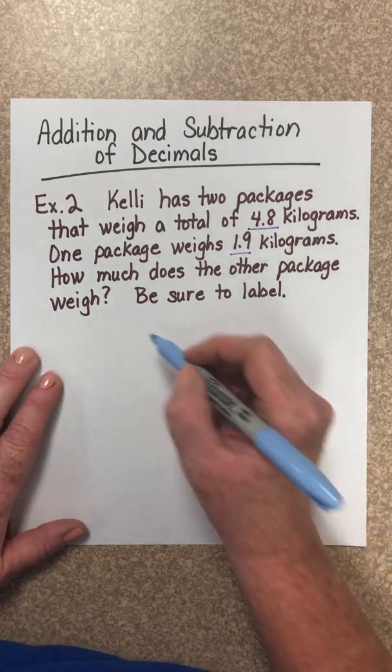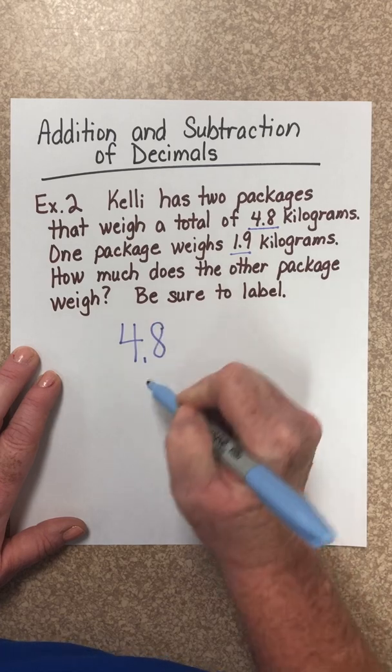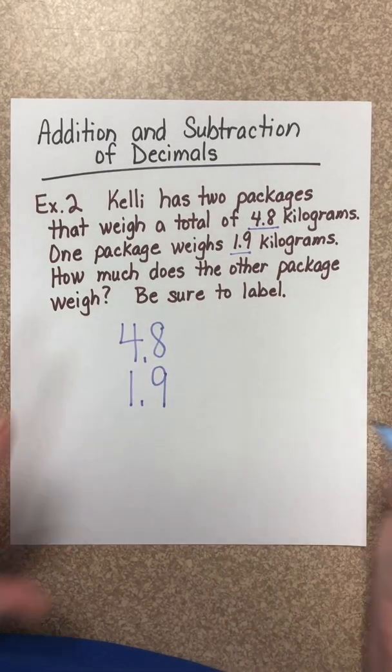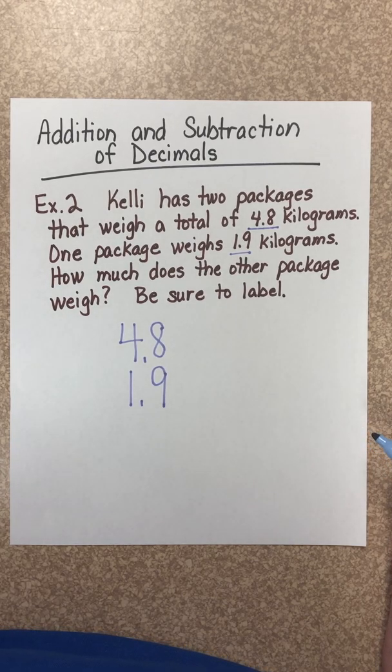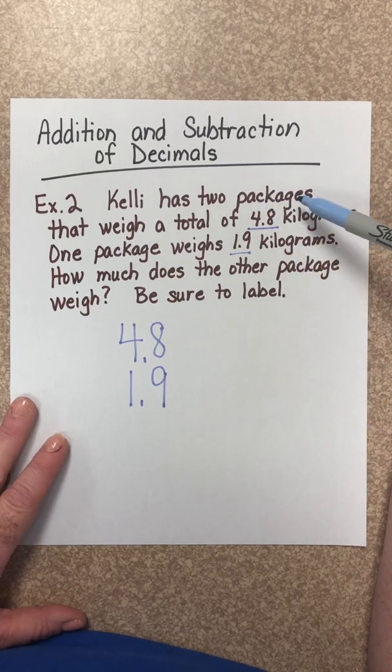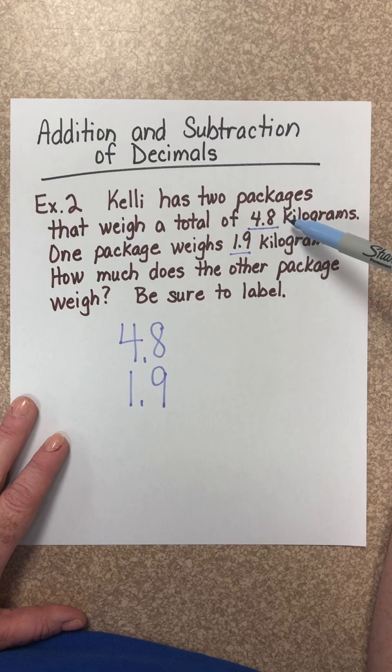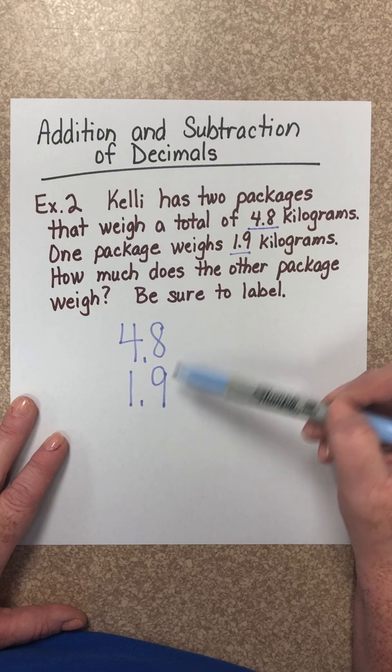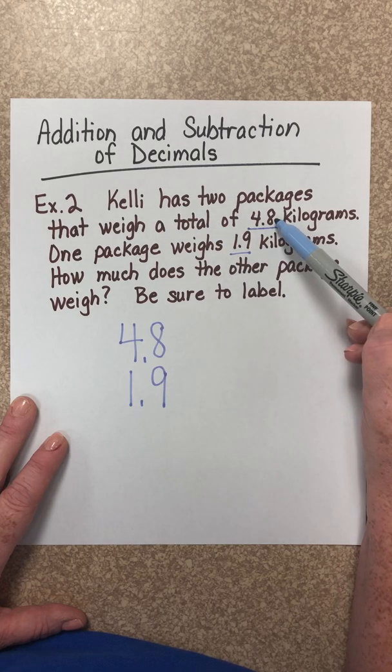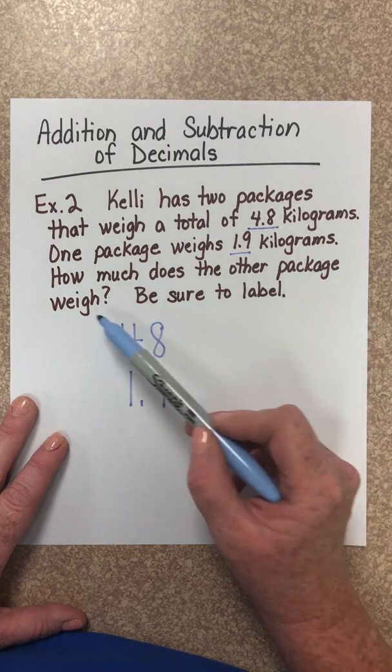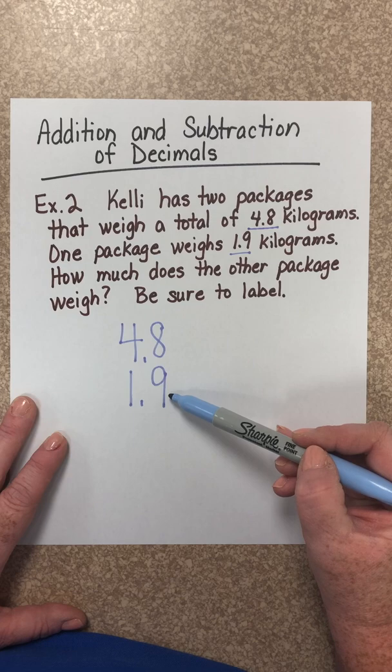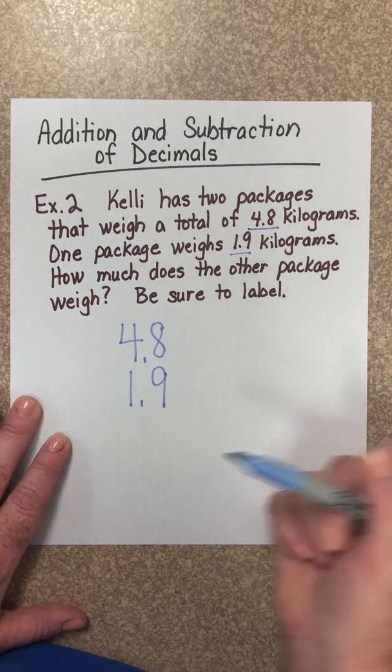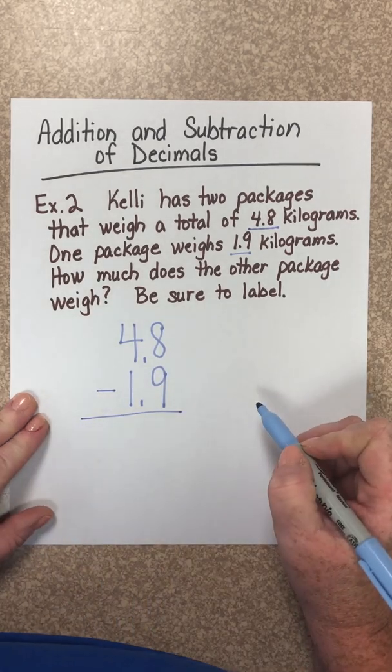Well, I know I'm working with decimals, so it's very important that I line up my decimal points. But what am I going to do with these two numbers? Do I add them or do I subtract them? Well, you have to read the problem very carefully. Kelly has two packages that weigh a total of 4.8 kilograms. That means two packages together are 4.8. So am I going to add 4.8 and 1.9? No, because we're told that the total of the two packages are 4.8. The question is, how much does the other package weigh? If 4.8 is the total, 1.9 is the weight of one package. We need to subtract to find the weight of the other package.